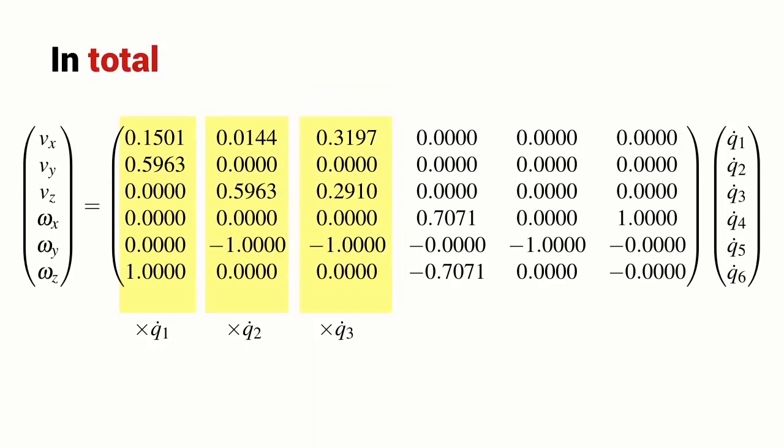This is the component due to Q3, Q4, Q5 and Q6, and we add the components due to each of the joints to get the sum total end effector spatial velocity.